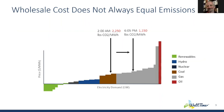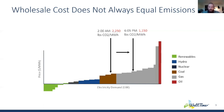Yes, marginal emissions applies to efficiency too. If you have a highly inefficient building and cut energy use by 50%, that means the gas plant on the margin doesn't need to run anymore — you've prevented that plant from running by reducing your demand.